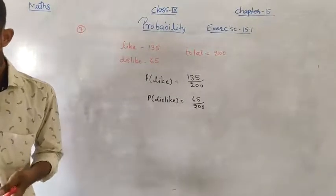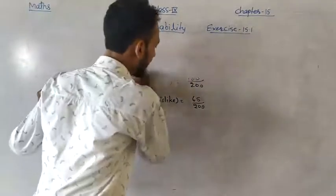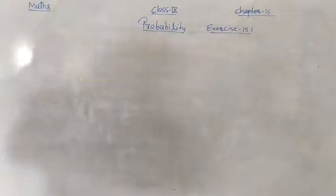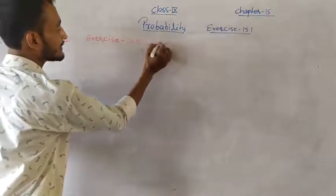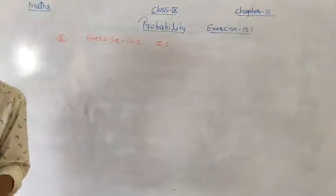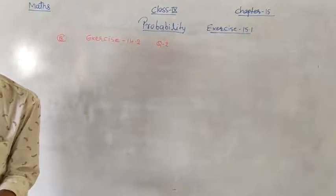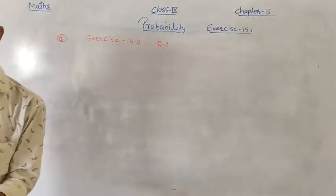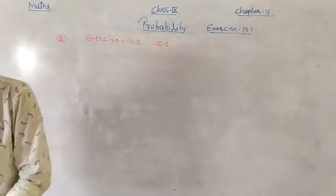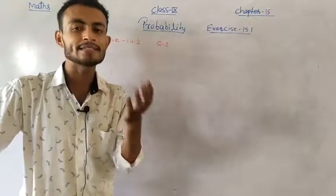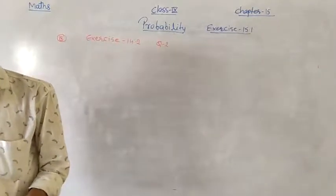Question 8: Refer to Question 2 of Exercise 14.2. Data about 40 engineers and the distance from their home to workplace is given. First, find the probability of distance being less than 7 km.